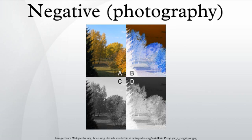Negatives are normally used to make positive prints on photographic paper by projecting the negative onto the paper with a photographic enlarger or making a contact print. The paper is also darkened in proportion to its exposure to light, so a second reversal results which restores light and dark to their correct order.